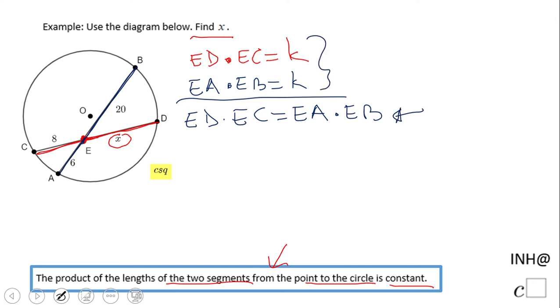So let's take a look. Now ED is the guy we need to find out, x times EC is 8, EA is 6, and EB is 20. So we have a simple equation here.